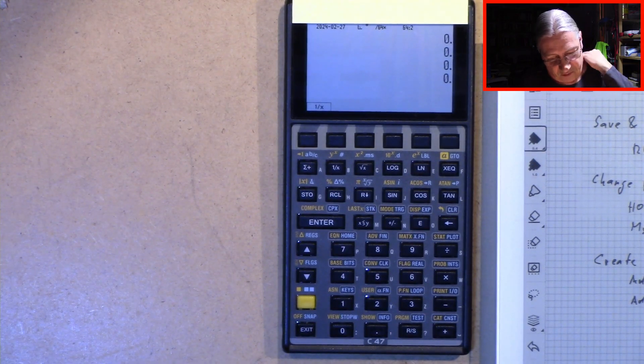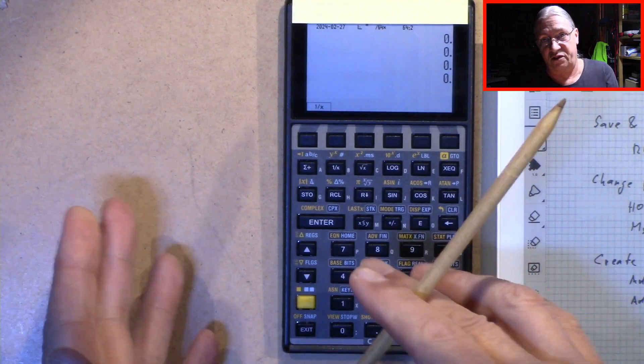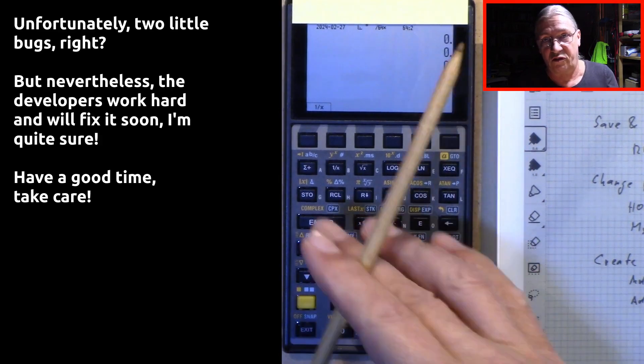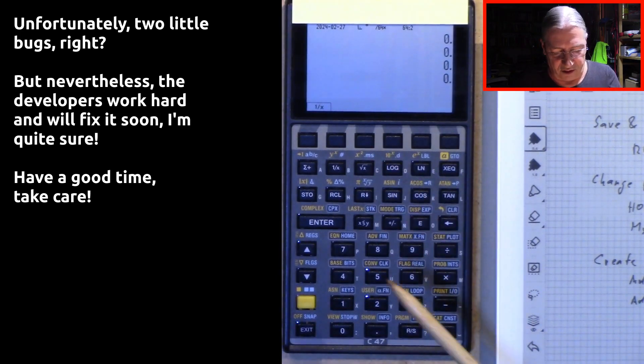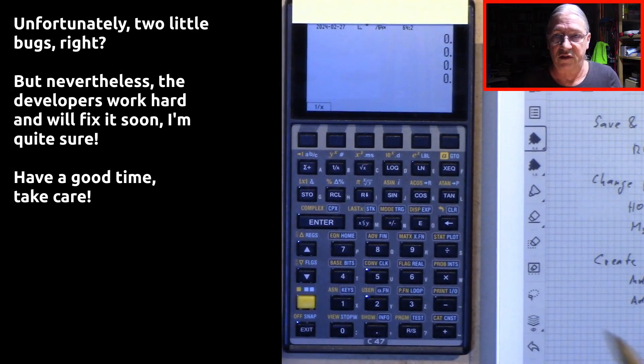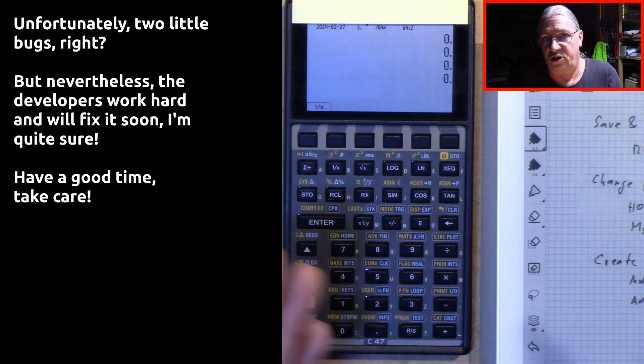So this was quite interesting because of this little bug we have seen. And I hope that you get an idea of the menu system of the C47 and maybe you like to test it.